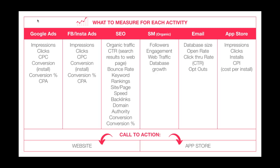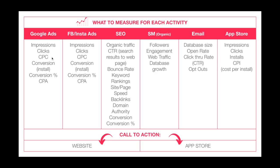So if we look at Google Ads, what we're looking at is impressions, clicks, and cost per click. Impressions is really how many times your ad has been served. Clicks is the number of times the audience that have seen the impression have actually clicked on it, and cost per click is how much that click costs.